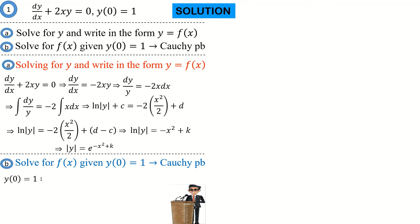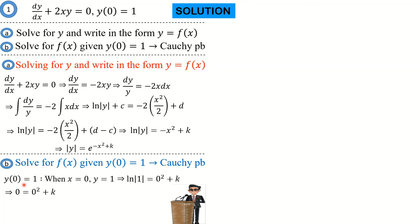The condition y(0) = 1 means that when x is equal to 0, y is equal to 1. We use that condition to find the value of the constant k. Replacing y with 1 and x with 0, we get ln(1) equals 0 squared plus k. Since ln(1) is 0, we get 0 equals 0 plus k, hence k is equal to 0.